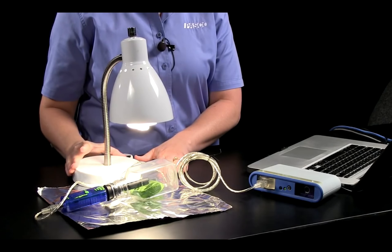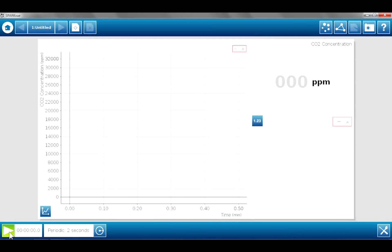So I'm now ready to begin data collection. I'm going to turn on the light, and I'm going to let the light shine directly on the bottle with the spinach leaves inside for about 30 seconds or so. The carbon dioxide sensor can be affected by light, and this will allow us to have a stable reading inside that bottle before beginning to collect data.